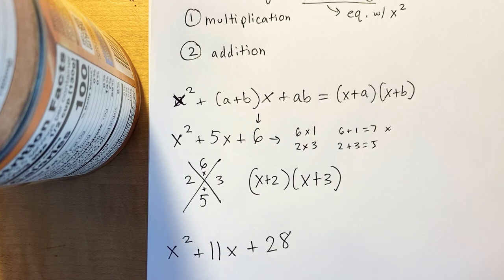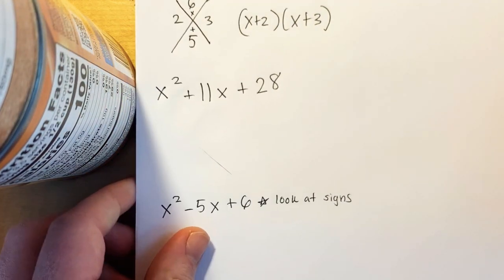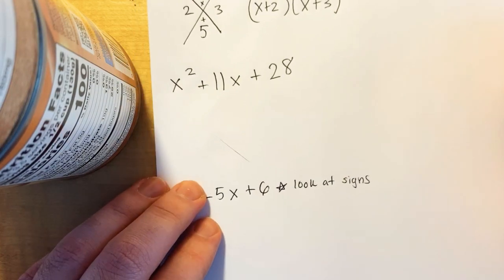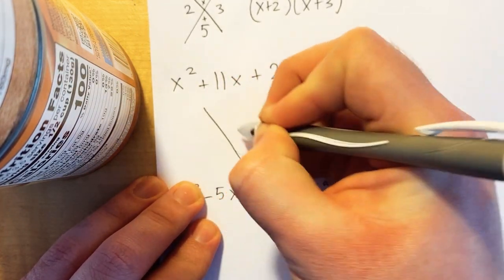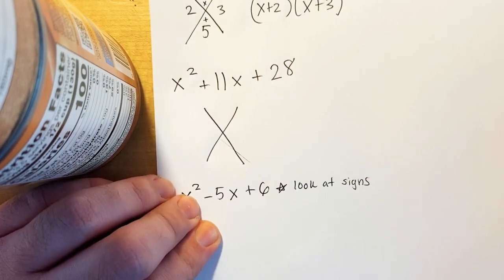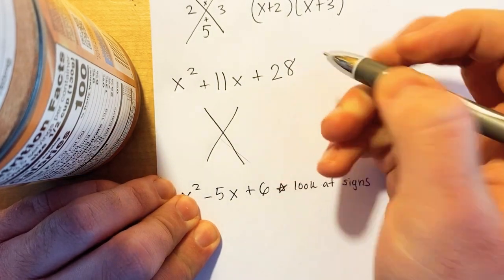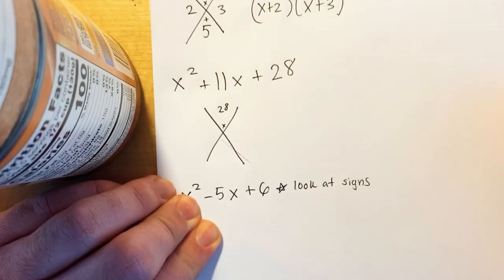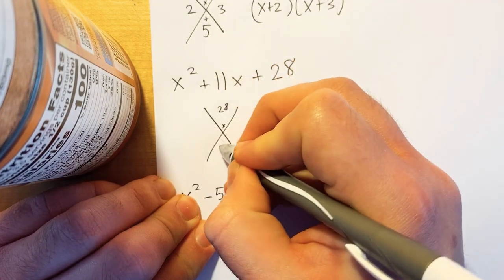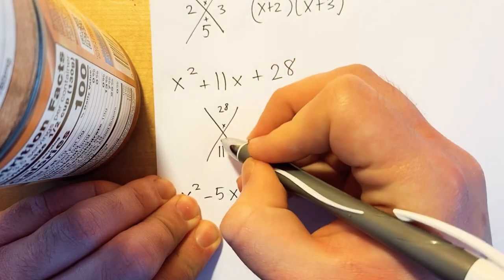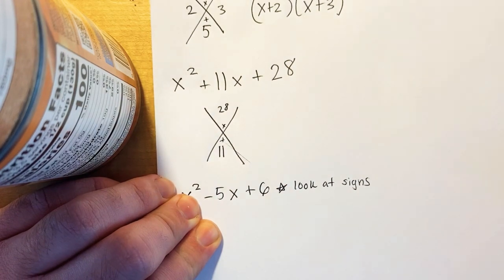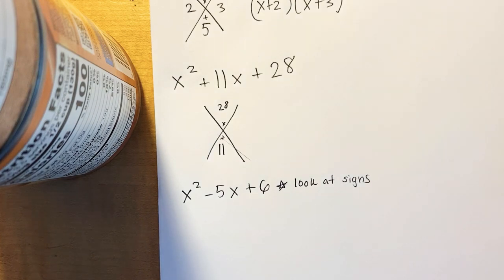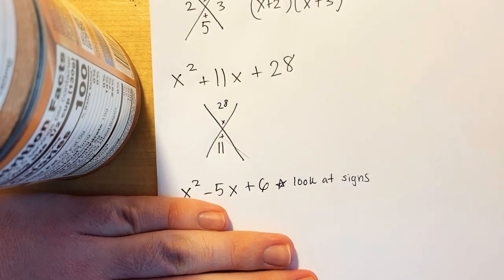Moving on to the next one: x squared plus 11x plus 28. Your first step, as always, is to make an X. Put the number at the end at the top — which is 28 — and remember to write an x for multiplication. The number in the middle — 11 — goes on the bottom with a plus, so you do multiplication on top and addition on the bottom. Now let's list the factors of 28.